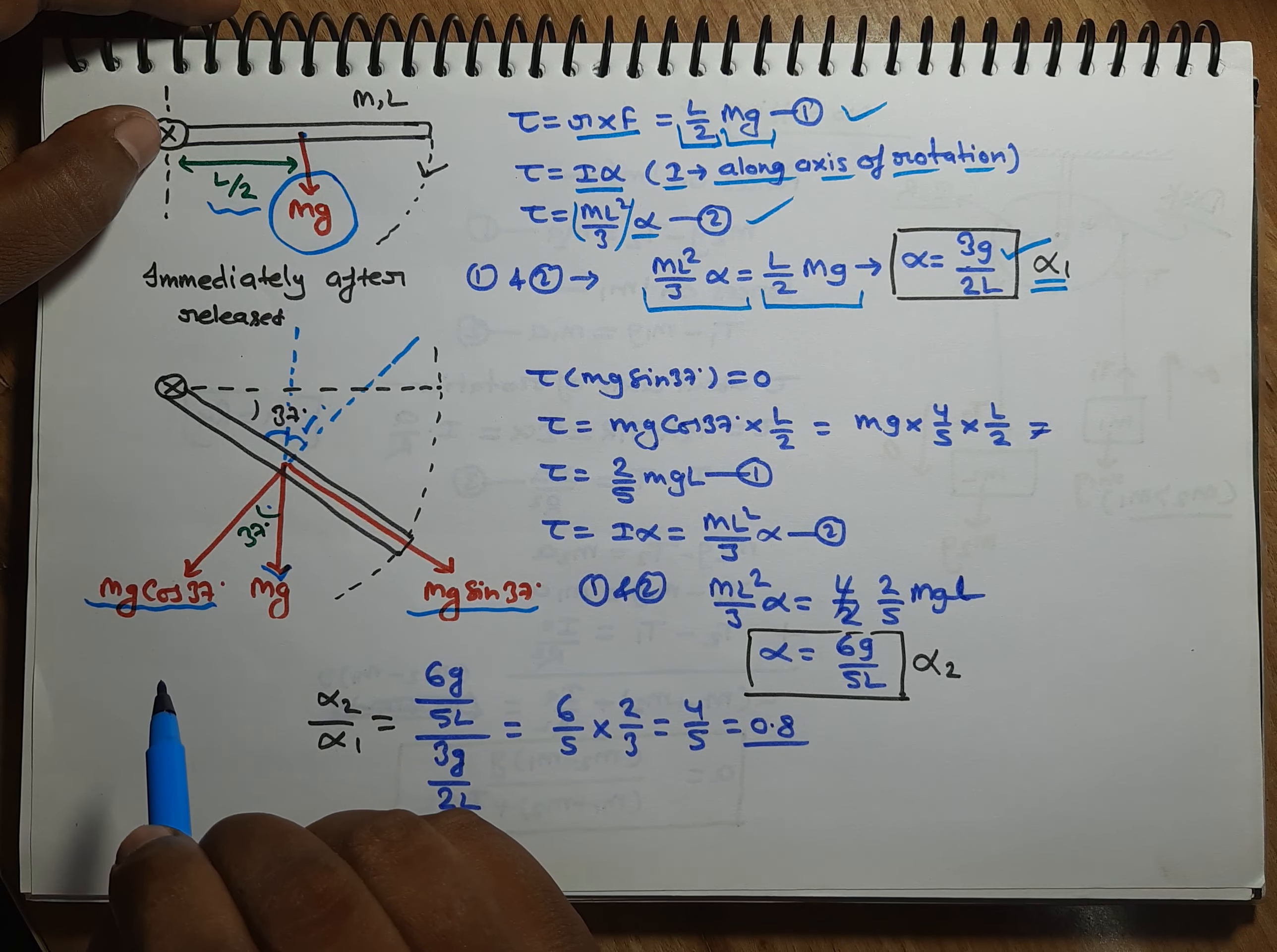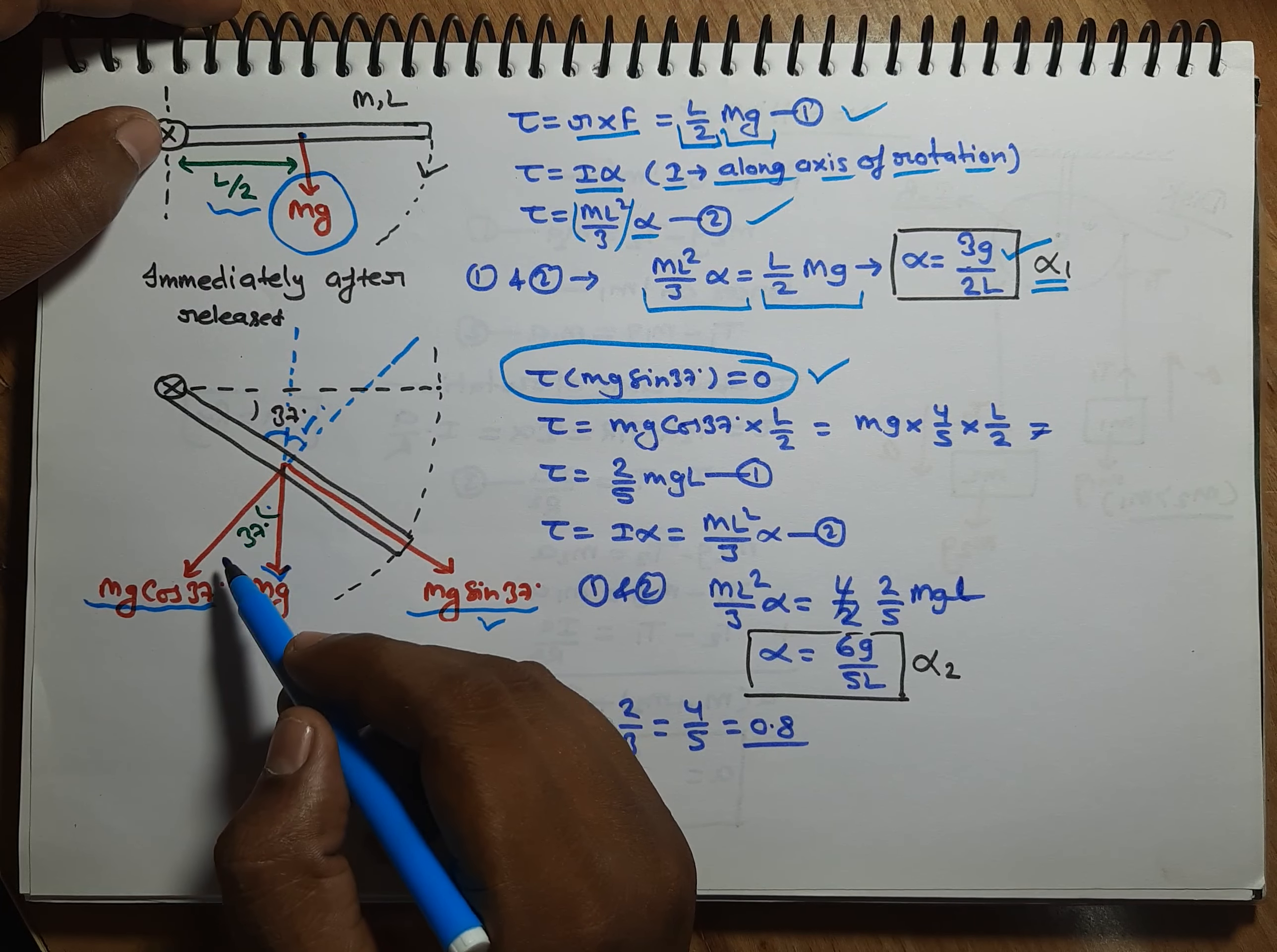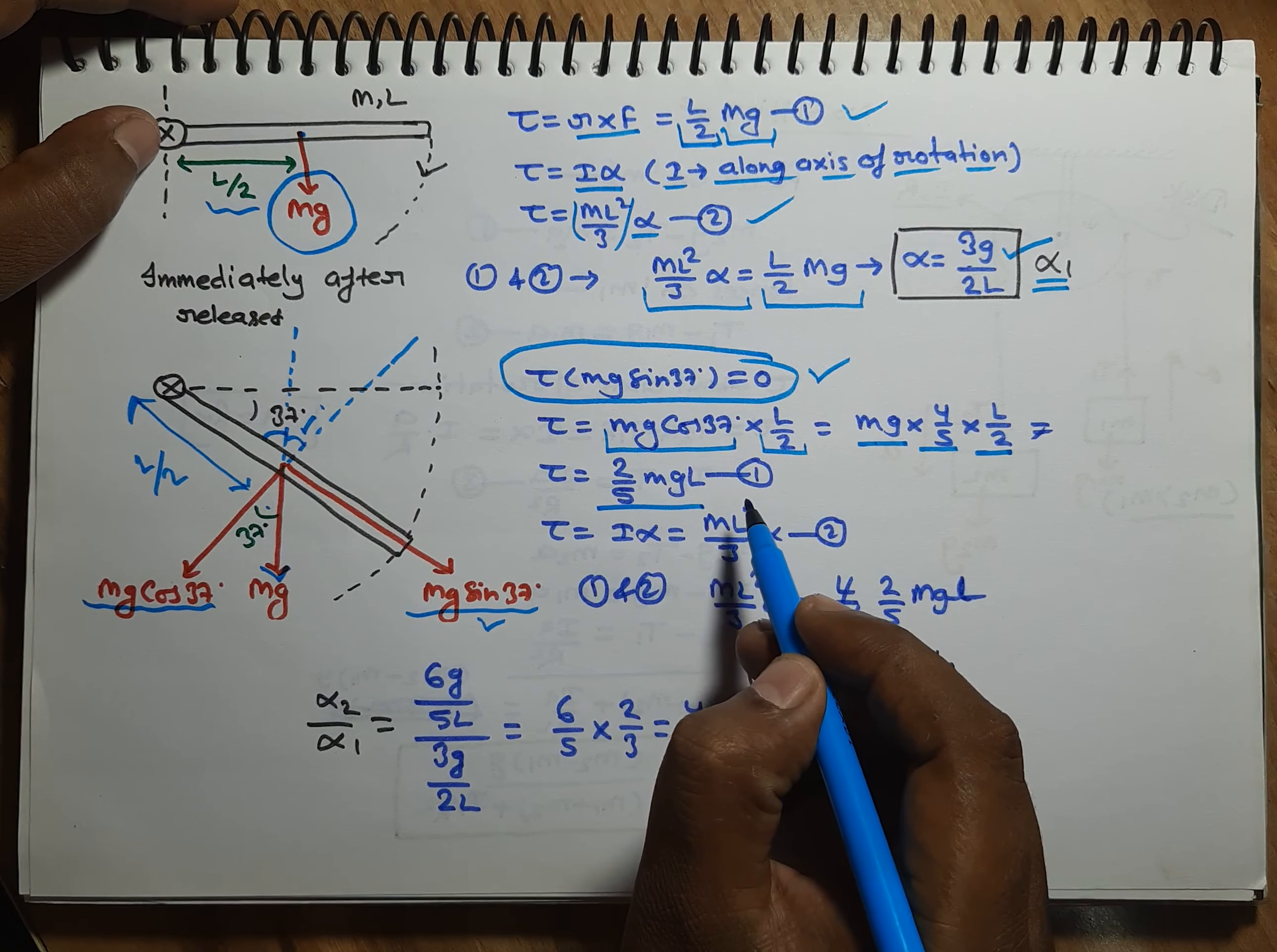Now friends, Mg sin 37, torque will be zero. Why friends? Perpendicular distance is zero from axis of rotation. Second, friends, if we talk about Mg cos 37, this distance is still L by 2. So, Mg cos 37 into L by 2. This will be Mg into 4/5 into L by 2. Its value will be 2/5 MgL. This is equation 1.